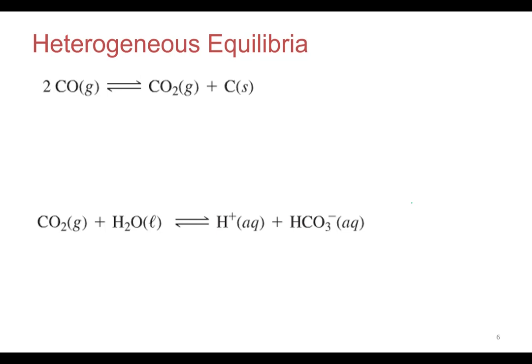So when you have heterogeneous equilibrium, you have different phases. For instance, this first one, carbon monoxide in equilibrium with CO2 and carbon solids, we got some gases and some solids. And then one below we got gases, liquids, aqueous ions. So heterogeneous equilibrium is that you have reactants and products in different phases.